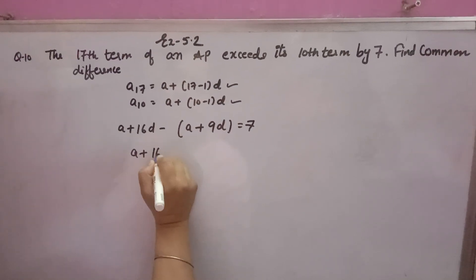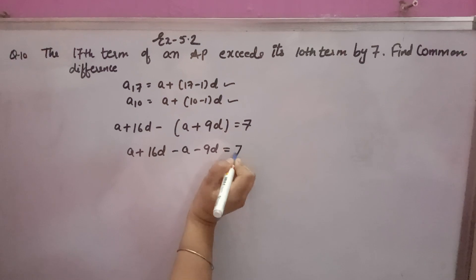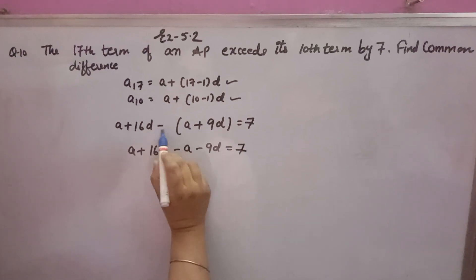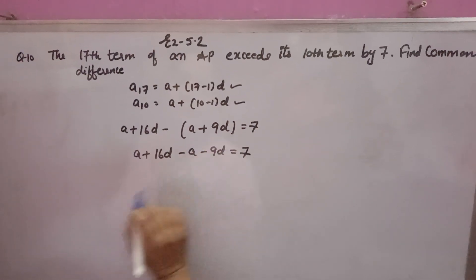Now you solve A plus 16D minus A minus 9D is equal to 7, because minus is outside the bracket, therefore the sign of both numbers will change.